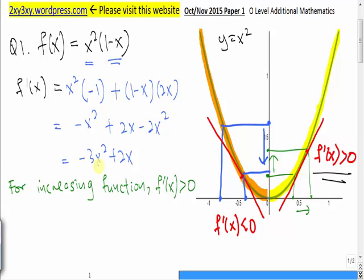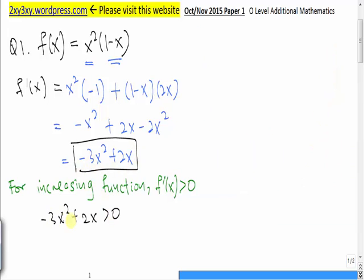To find the value of x for which this function is increasing, we have to make this greater than zero. Now this is a quadratic inequality. To solve a quadratic inequality, you can use a quadratic graph to help us find the range of value of x that is greater than zero.